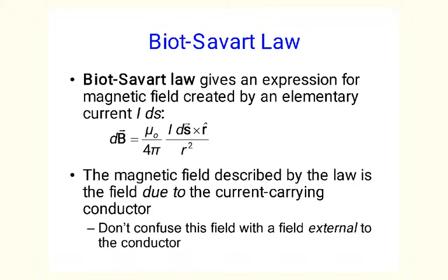If we take a small element of the wire ds and multiply it by the current that flows through this element i, we obtain what is called an elementary current i times ds. The magnetic field created by the elementary current is given by: dB equals mu_0 over 4 pi times i times ds cross r-hat divided by r squared. The magnetic field described by this law is the field due to the current-carrying conductor, specifically due to this elementary current i ds. You shouldn't confuse it with the field created by other conductors that is felt by ds and creates magnetic force on i ds.